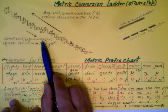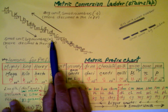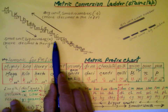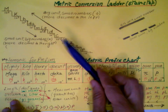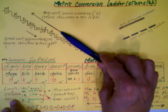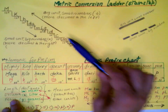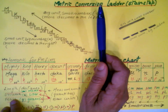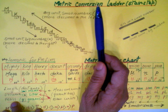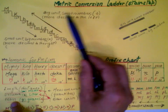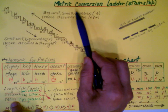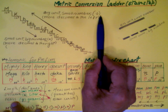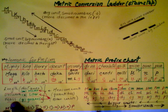Going down, units get smaller, so the number must be bigger. To get that bigger number, you multiply by a power of 10, which is the same as moving the decimal to the right. Going up, units get bigger, so you need a smaller number — you divide by a power of 10, which is the same as moving the decimal to the left.